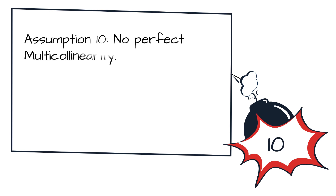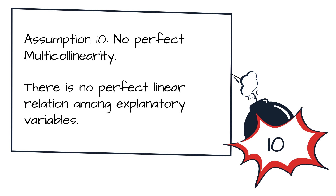The tenth assumption states that there is no perfect multicollinearity. This means that explanatory variables do not have any linear relationship with each other. If you have many explanatory variables and those variables have a linear relationship between them, then the linear regression model fails.